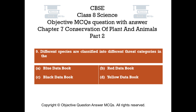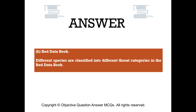Question number 9. Different species are classified into different threat categories in the: Option A Blue Data Book, Option B Red Data Book, Option C Black Data Book, Option D Yellow Data Book. The right answer is Option B — Red Data Book. Different species are classified into different threat categories in the Red Data Book.